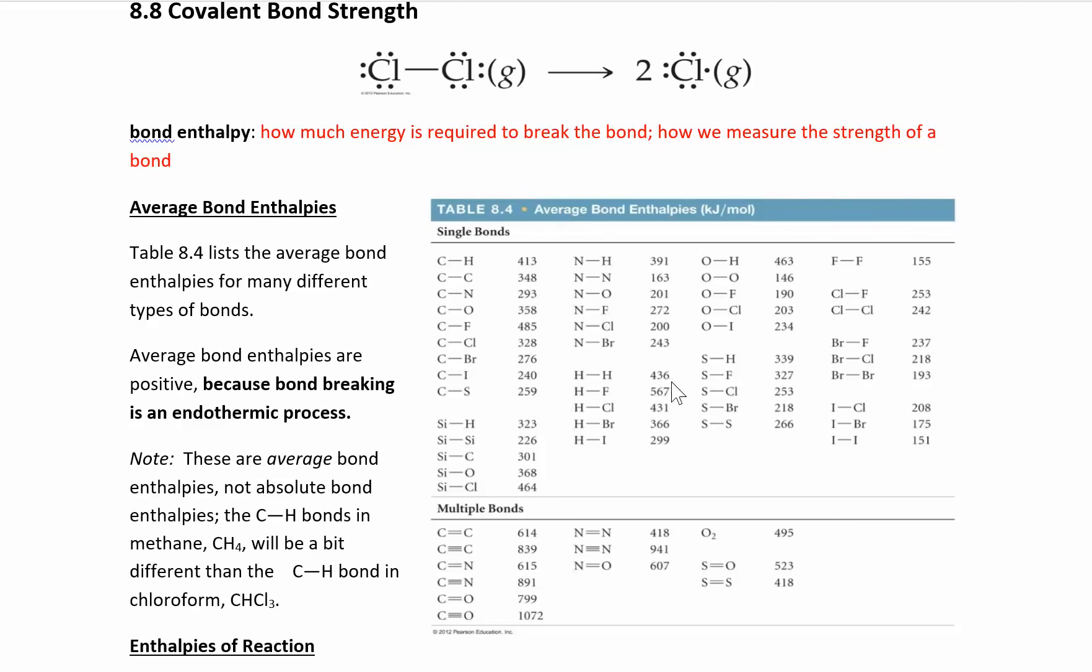This is a table of bond enthalpies, the average bond enthalpies. They're positive because it costs energy to break bonds. These are averages, meaning you can measure the C-H bond strength in a bunch of different compounds, then take an average. That's how this table was made.